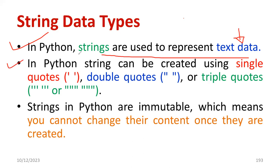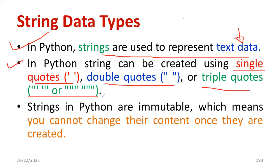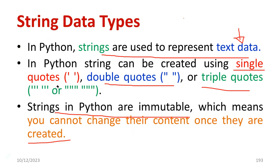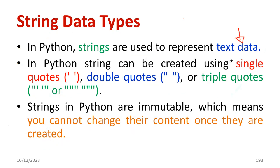How do you represent a string in Python? We have options. You can use single quotes, double quotes, or even triple quotes — all are supported by Python. One more important thing to note: once you create a string, you cannot alter it. That means strings in Python are immutable — you cannot change their content once they are created. These are the basics you need to understand about string data type in Python.